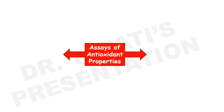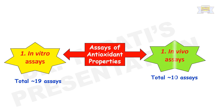Numerous analytical techniques are available to measure the antioxidant property of samples obtained from food, plant, or synthetic antioxidants. Above 19 in vitro and 10 in vivo methods are currently in use for the estimation of antioxidant properties of different samples. However, antioxidant activity must not be tested on the basis of a single method, because no single index is considered sufficient to determine total antioxidant property.